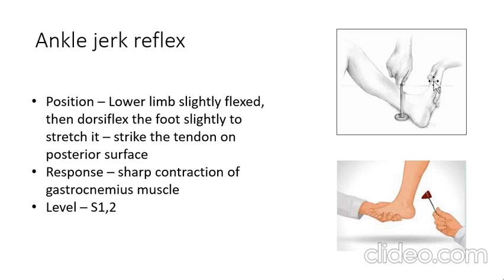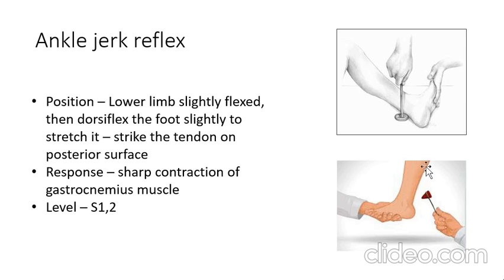For the ankle jerk, the lower limb is slightly flexed with dorsiflexion applied to stretch the tendon. It can be done in supine or sitting position. Strike the Achilles tendon posteriorly with the hammer; contraction of the gastrocnemius muscle occurs. The level is S1-S2.